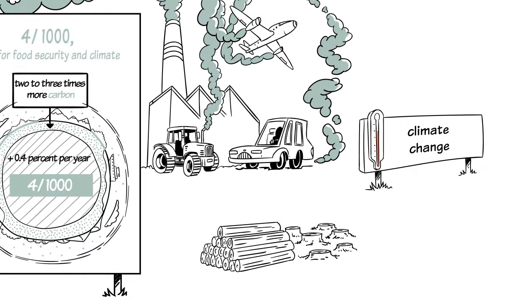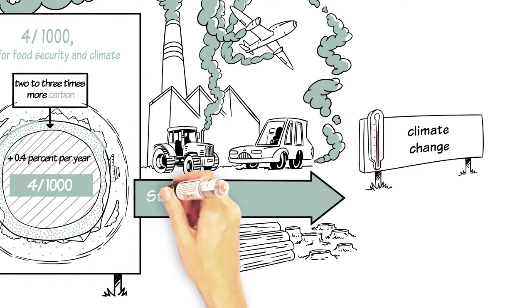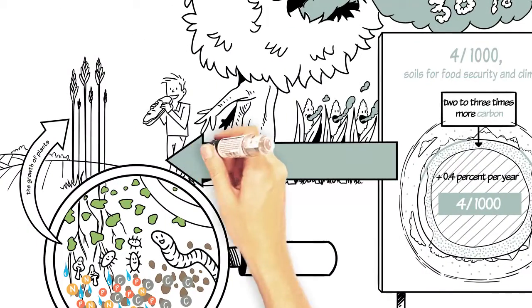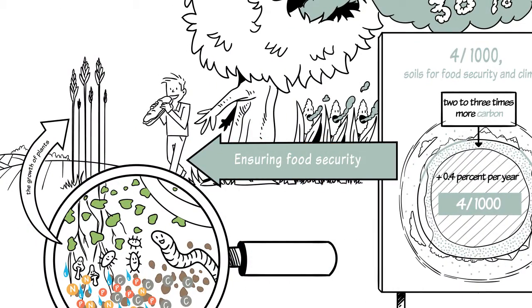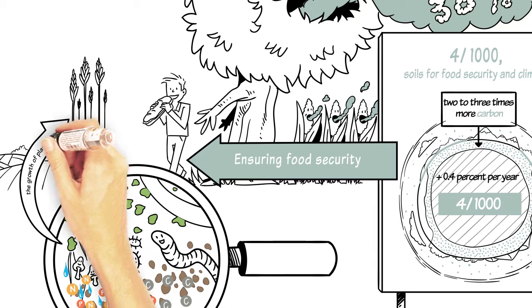The increase in carbon storage in soils would therefore contribute not only to stabilizing the climate, but also to ensuring food security, that is the supply of sufficient food for all people.